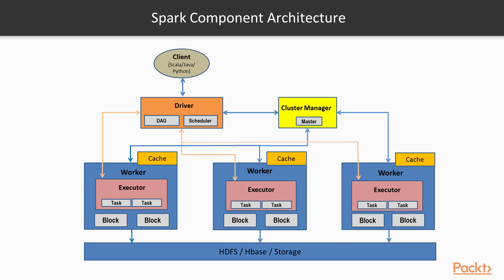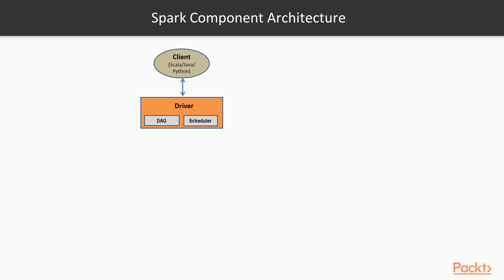These components run in different places using different deployment modes. In case you are running Spark on YARN, there would be several variations. However, all the components are still involved and have the same roles. The life of a Spark Application starts and finishes with the Spark Driver. The Spark Driver is the process that uses Spark as a library and takes the data processing code provided by the client and executes it on the worker nodes.